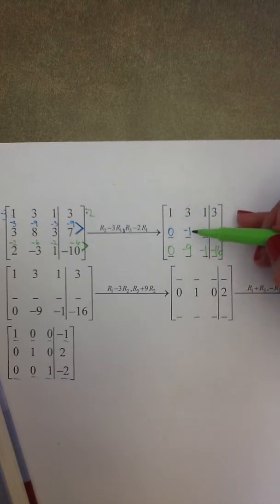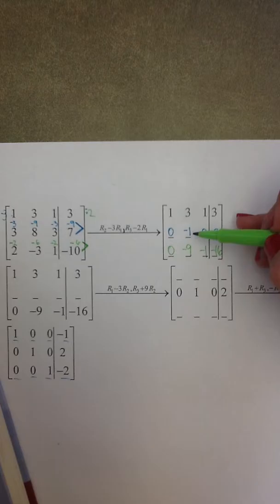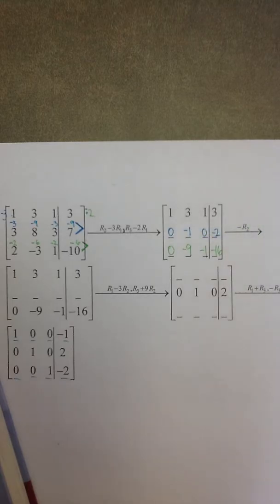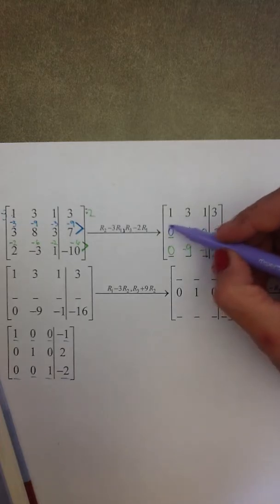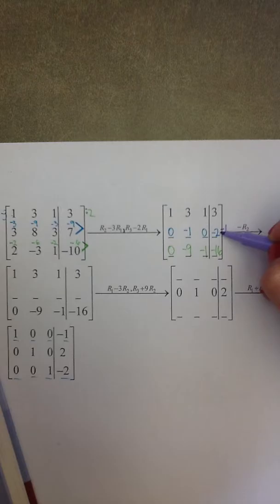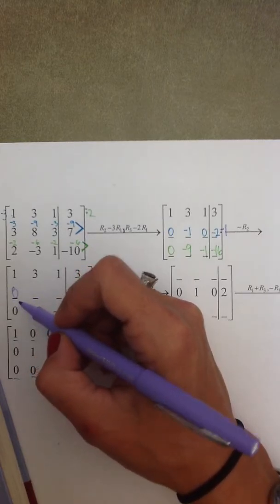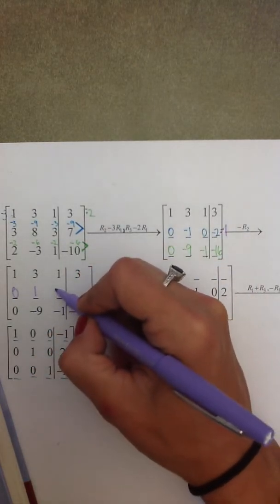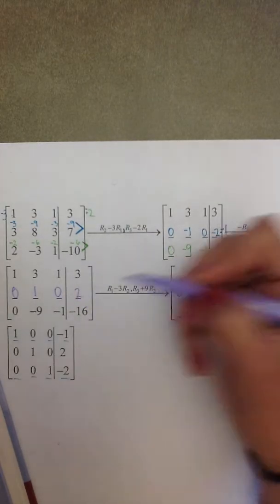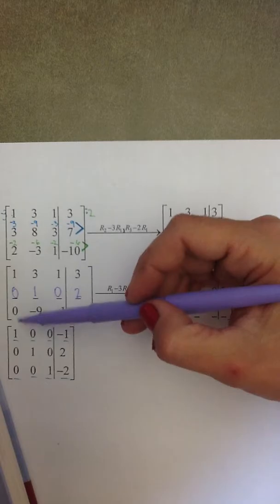Moving to row two, column two as I move down the principal diagonal. This negative one needs to be a one. To change the sign of a number, multiply by negative one — that's negative one times row two, or negative row two. So zero stays the same, negative one becomes positive one, zero stays the same, and negative two becomes positive two.